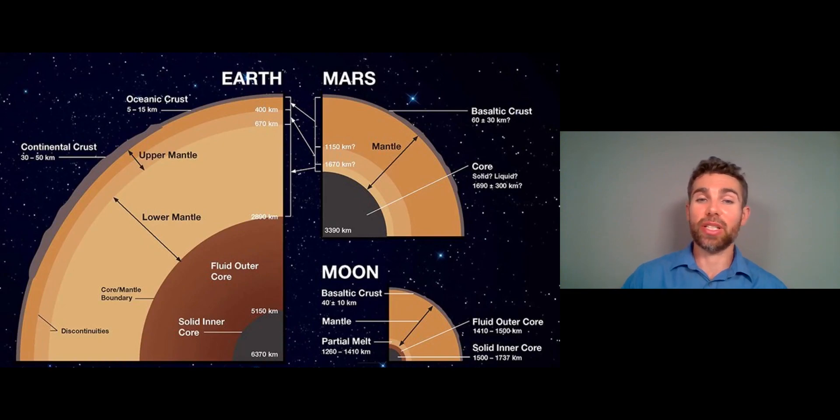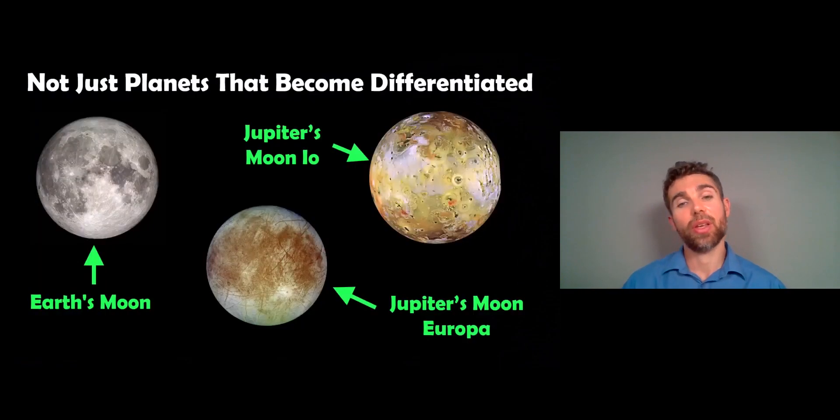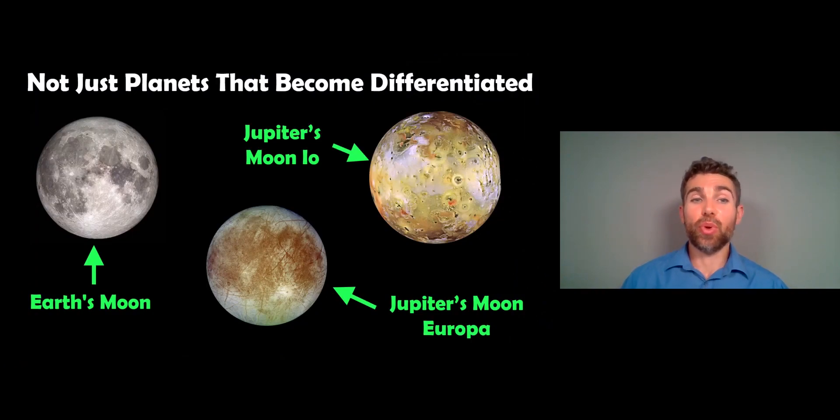And if you were to look in more detail, you'd find they have different compositions as well. You've got an iron core, for example, then you'd have lighter material than the outermost crust. And it's not just planets that show evidence of this. You get moons. We know about the Earth's moon, but Jupiter's moons are also differentiated.